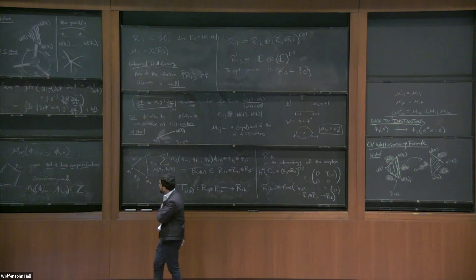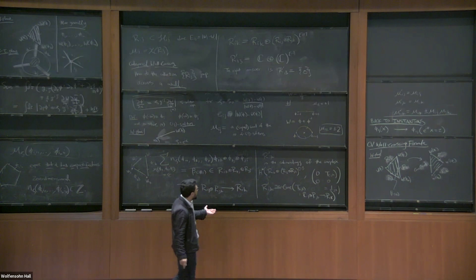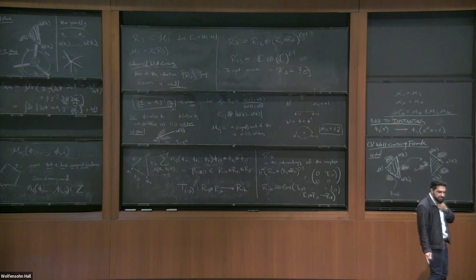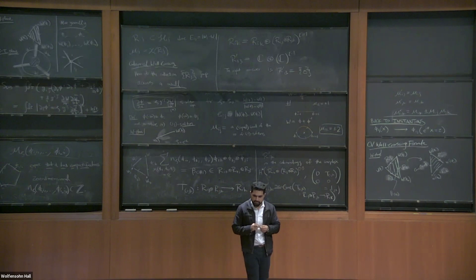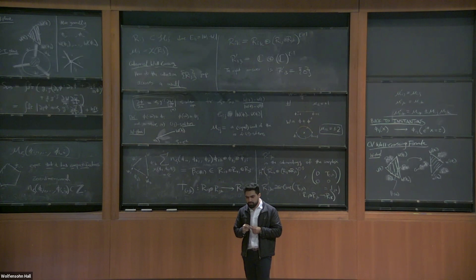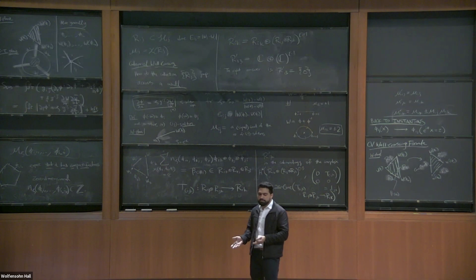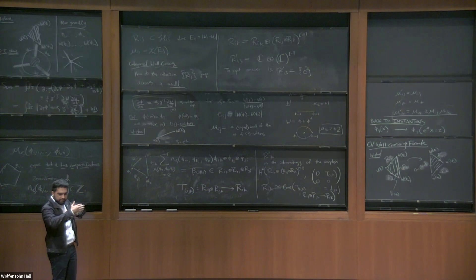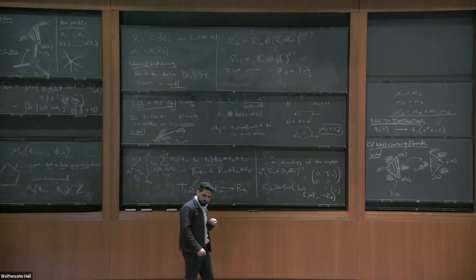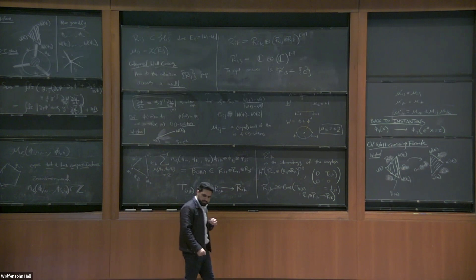There are other contexts in which zeta instantons are useful. First, you can ask the same question in other dimensions — for example, in 4d N=2 field theory, what is the analog of the zeta instanton that provides tunneling across wall crossing? Another use: take W to be a holomorphic functional on some infinite-dimensional space of fields. For example, if W is the holomorphic Chern-Simons functional, the corresponding soliton equation is a holomorphic map equation, and the instanton equation is a three-dimensional equation — which I believe is the instanton equation for Rozansky-Witten theory.